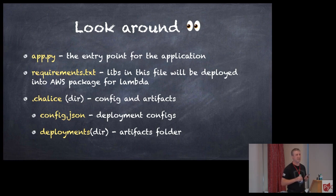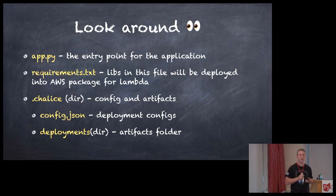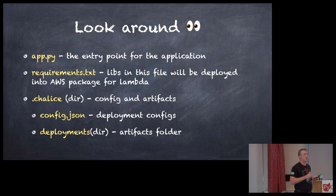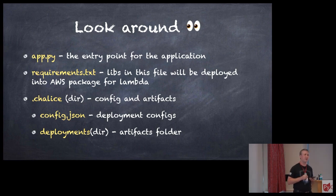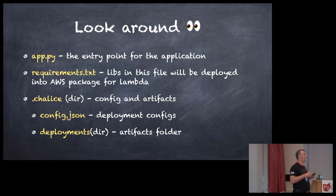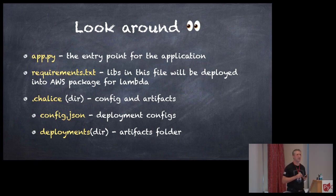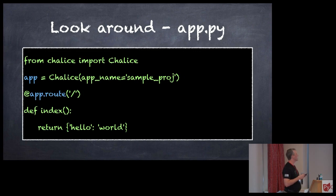Then you've got your requirements.txt. It's actually quite important here because it's going to build a package from the ground up and look into that to understand what libraries it needs to carry into the package to deliver it into AWS. Make sure you keep it up to date, otherwise the deployer won't know what you're trying to import. Then we have the .chalice folder — that one is for configs and artifacts. The config.json is where you do your custom configuration and various adjustments for deployments. The deployments folder is really artifacts storage for Chalice itself.